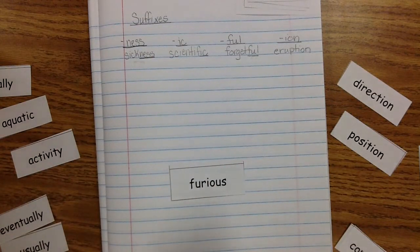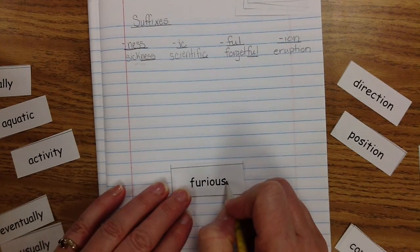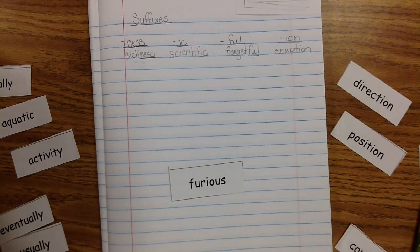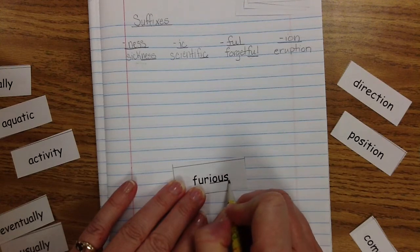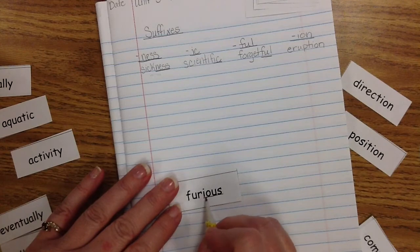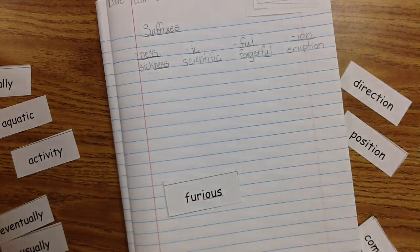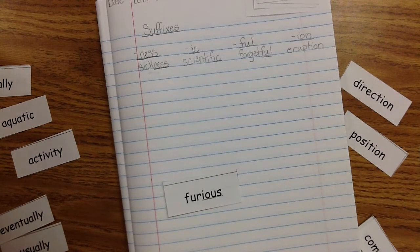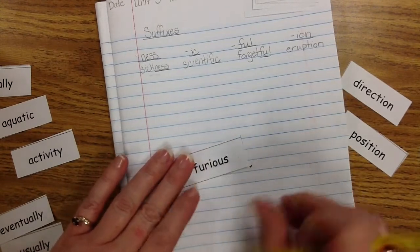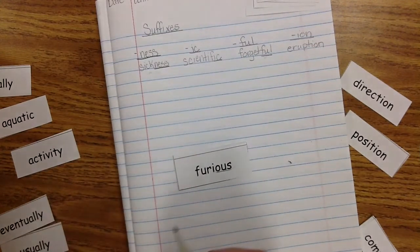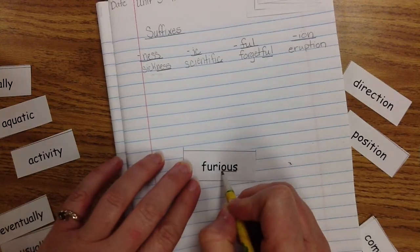Here's another: 'furious.' What would be the base word? Fury — because you change the Y to an I and add -O-U-S. -I-O-U-S means having the qualities of. Actually, -O-U-S means full of — so if you're furious, you're full of fury, full of anger. So the suffix is -O-U-S and that means full of.